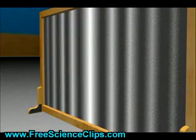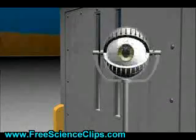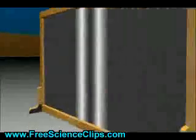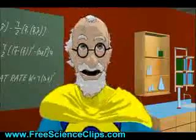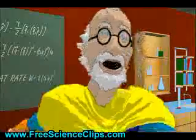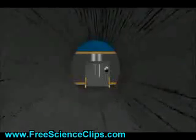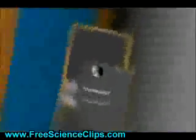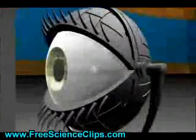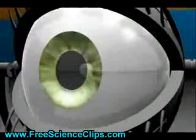The very act of measuring, or observing, which slit it went through, meant it only went through one, not both. The electron decided to act differently, as though it was aware it was being watched.